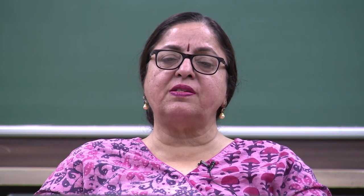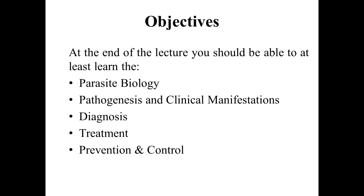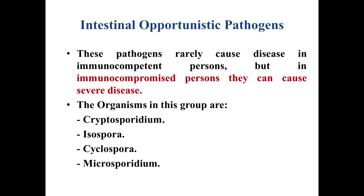Next, we go on to intestinal protozoa Part 2, which comprises mainly coccidian parasites and microsporidia. This will help you understand the parasite biology, their pathogenesis and clinical presentation, diagnostic features, treatment, and how to prevent and control these diseases. All these are mainly intestinal opportunistic pathogens — they rarely cause disease in immunocompetent persons, but in immunocompromised people they can cause severe disease. The important organisms in this group are Cryptosporidium, Isospora, Cyclospora, and Microsporidium.